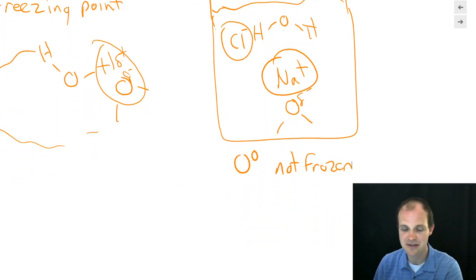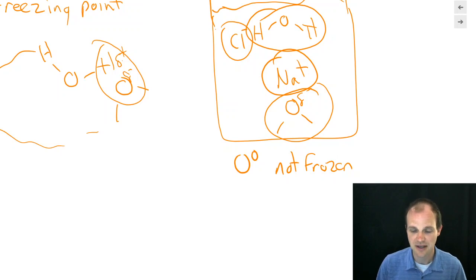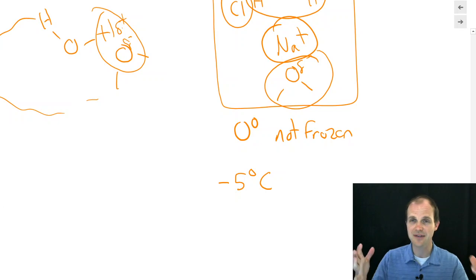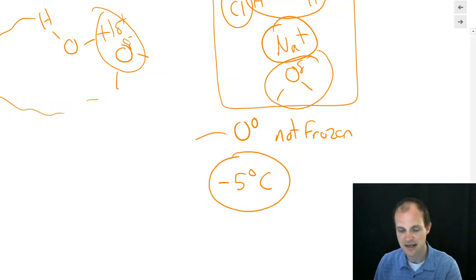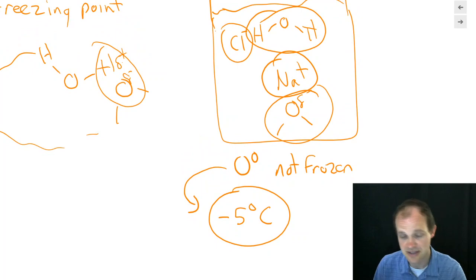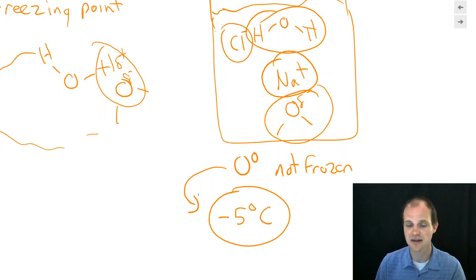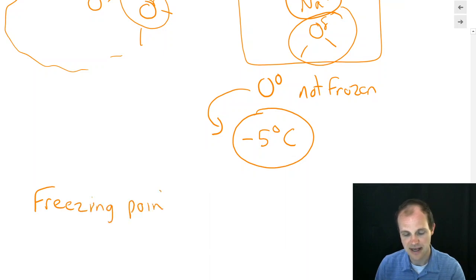In order to get water molecules to do their little dance, you have to slow those ions down by taking the temperature down. Maybe not zero degrees Celsius — maybe minus five degrees Celsius. Everything slows down enough that the water molecules can freeze. So freezing point, instead of being zero degrees, is now minus five degrees. If you have salt water at minus four degrees in this example, it's still a liquid. We call this freezing point depression — we've depressed, or lowered, the freezing point.